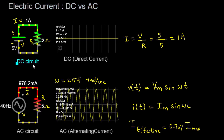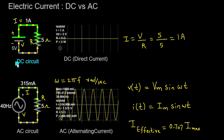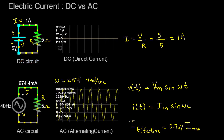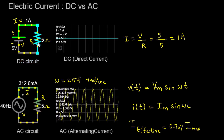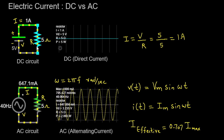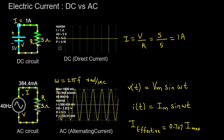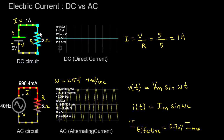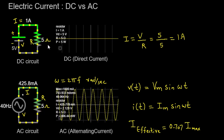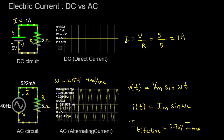Let's commence by examining a DC circuit. In this scenario, we have a simple setup comprising a 5-volt battery connected in series with a 5-ohm resistor. When a DC voltage source is introduced to a circuit, the flow of electric charge is unidirectional, meaning the current flows in one constant direction. To comprehend DC circuits, we rely on Ohm's law, a crucial principle in electrical engineering.